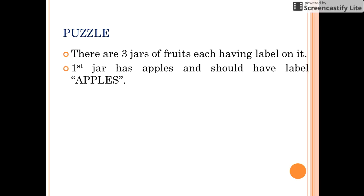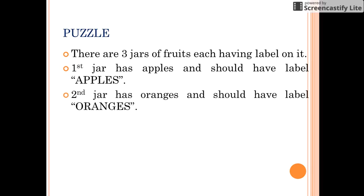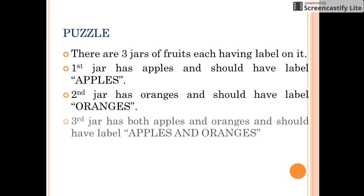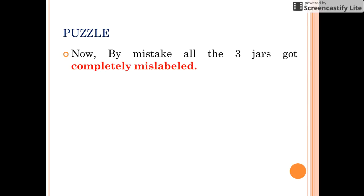The first jar contains apples and is labeled as apples. The second jar contains oranges and has a label as oranges. Similarly, we have a third jar having both apples and oranges and is labeled as apples and oranges. But by mistake, all three jars are mislabeled.